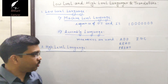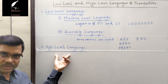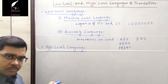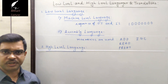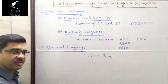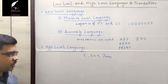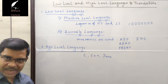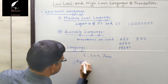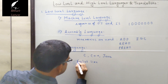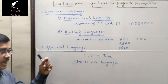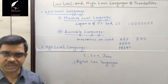The next category is high-level language. In high-level language, programs are written with specific languages — for example, C, C++, and Java. These are examples of high-level languages. English-like simple languages are used to write high-level language programs.